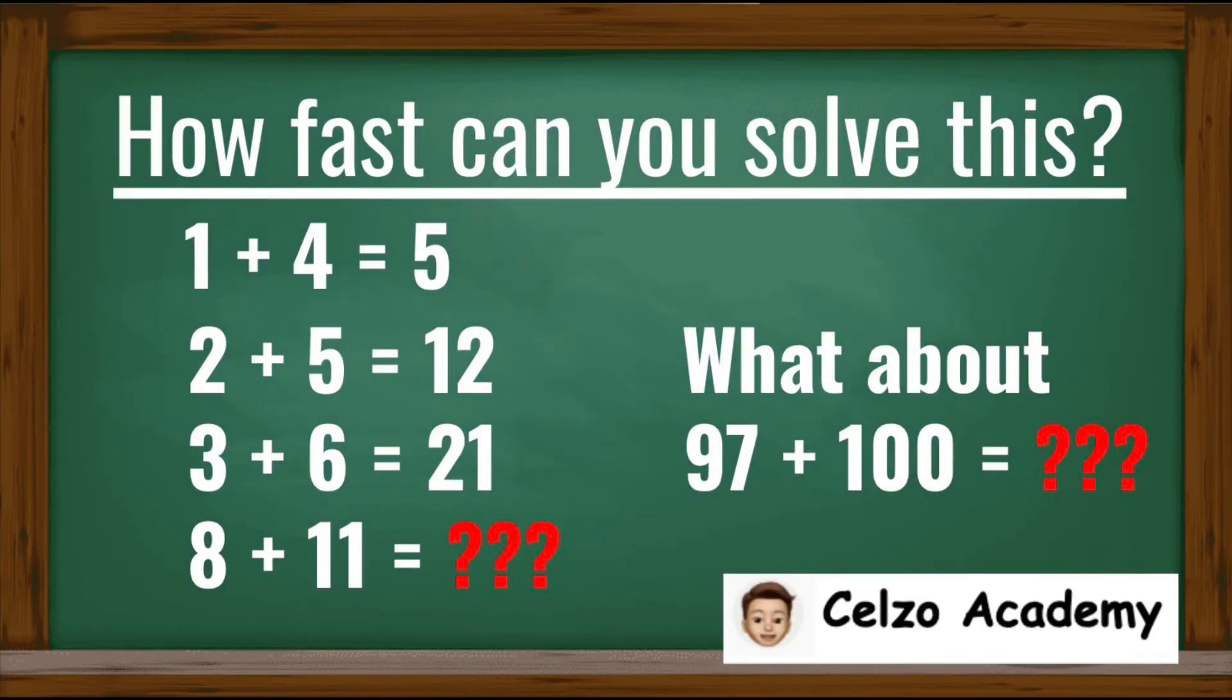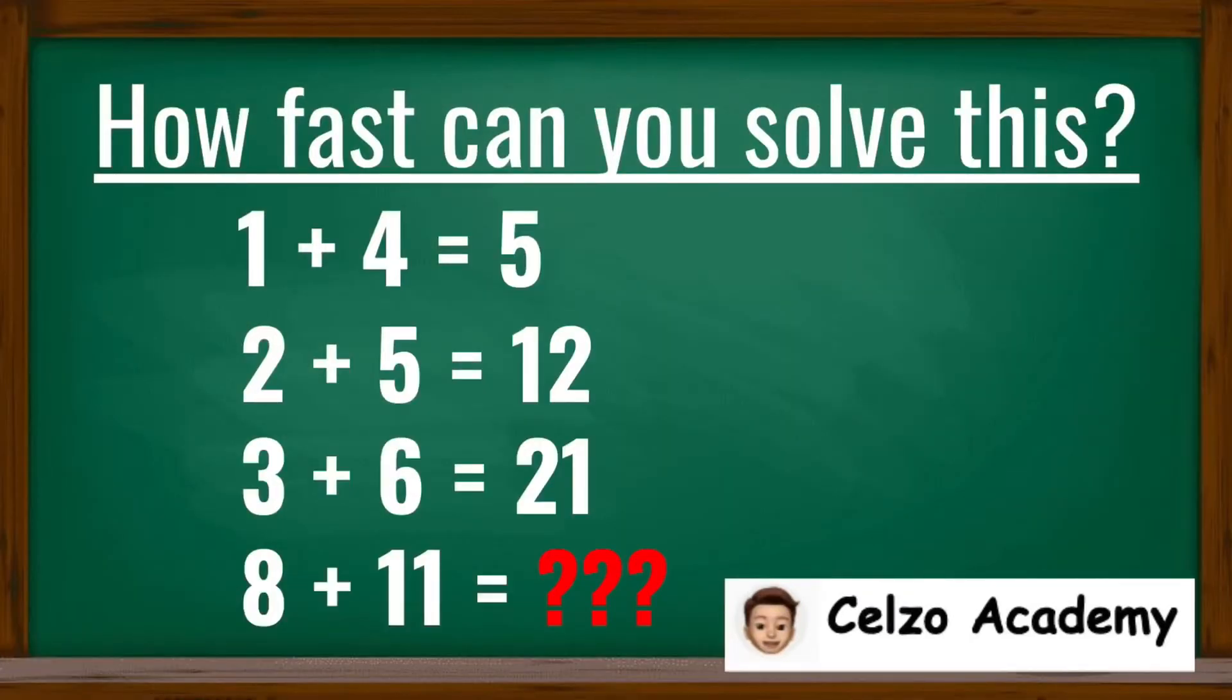Let's investigate this problem involving pattern. 1 plus 4 equals 5, which is a true equation. 2 plus 5 equals 12. This means the plus sign here is a made-up operation. 3 plus 6 is 21, and find the value of 8 plus 11.